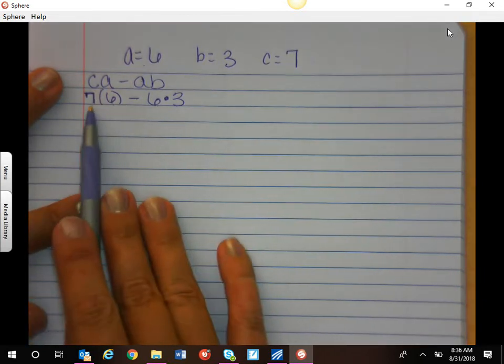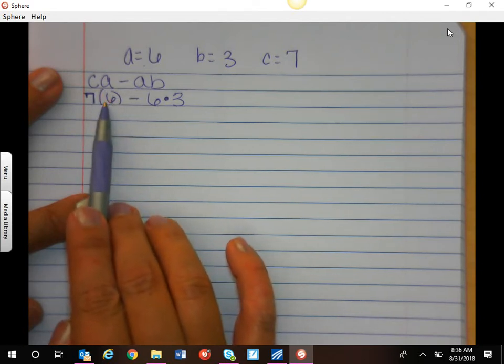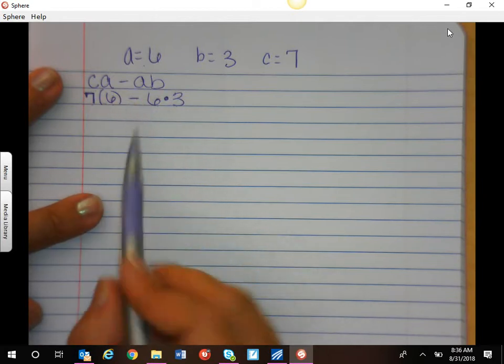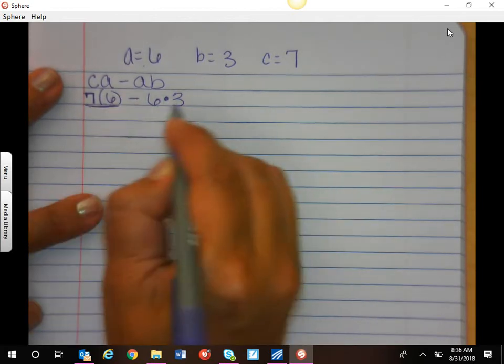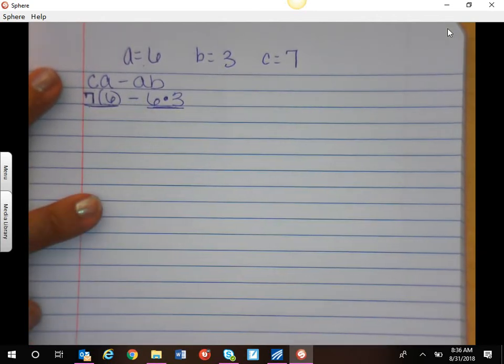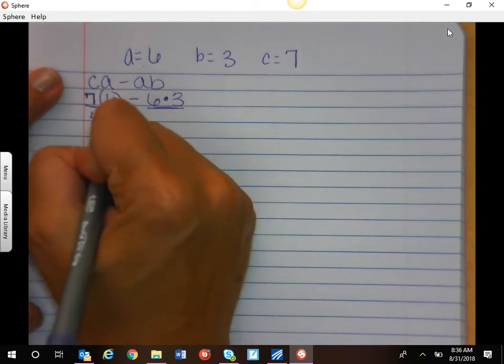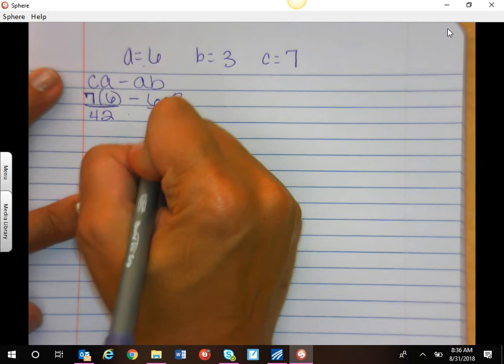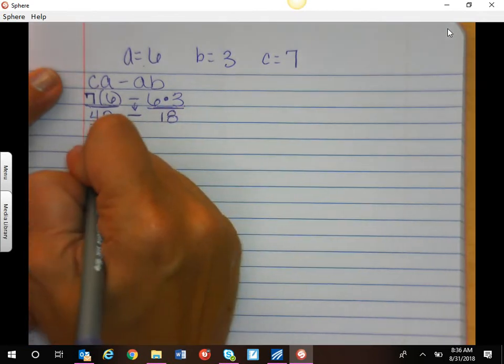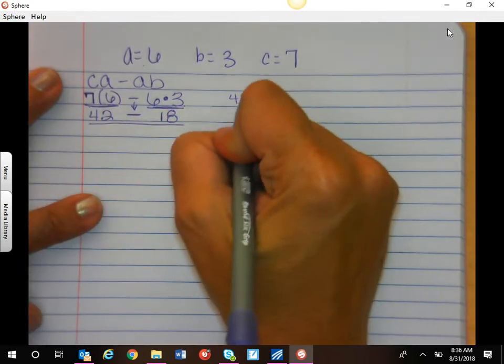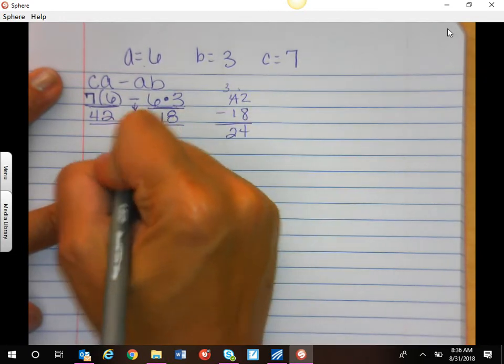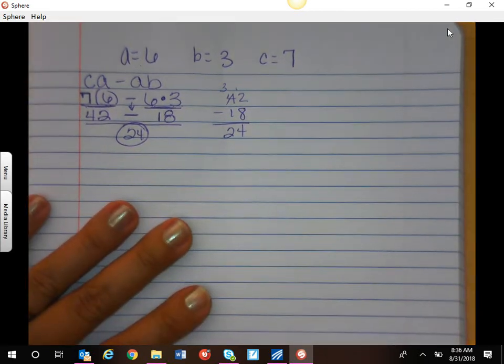So order of operations. Parenthesis. This is a different kind of parenthesis, because there's no operation in it. This parenthesis means multiply. No parenthesis, no exponents. So I have multiply, divide, from left to right. Well, I have two multiplies. I need to do both of those before I can subtract. So 7 times 6 is 42. 6 times 3 is 18. And I'm going to bring down this minus. And now I can finish, and I can say 42 minus 18. Don't forget to borrow. It's 24.